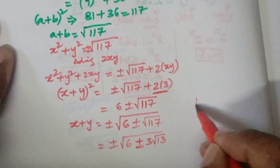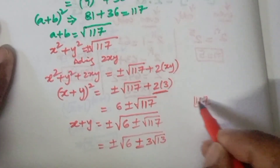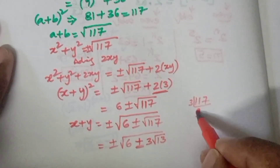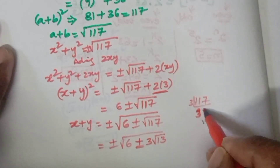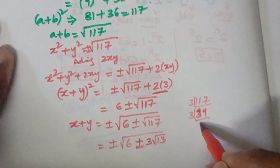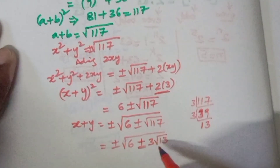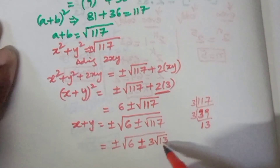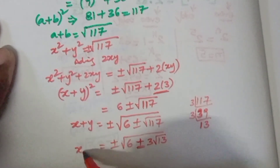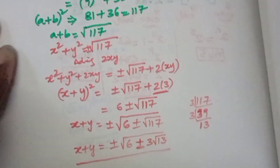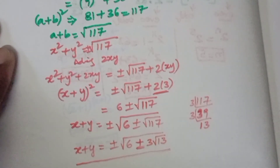Let us simplify root 117: 117 divided by 3 gives 39, and 39 divided by 3 gives 13. So 117 equals 3 squared times 13, meaning root 117 equals 3 root 13. Therefore, x plus y value is plus or minus the square root of 6 plus or minus 3 root 13. That is the answer.